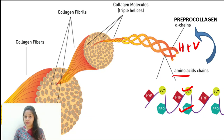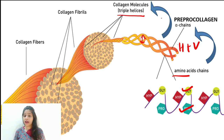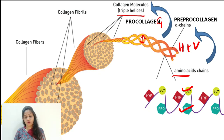At the level of pre-pro collagen, it further undergoes twisting. The single-unit chains twist with the help of hydrogen disulfide bonds to form a triple helix molecule. This process is termed glycosylation. This triple helix is otherwise also called pro collagen.